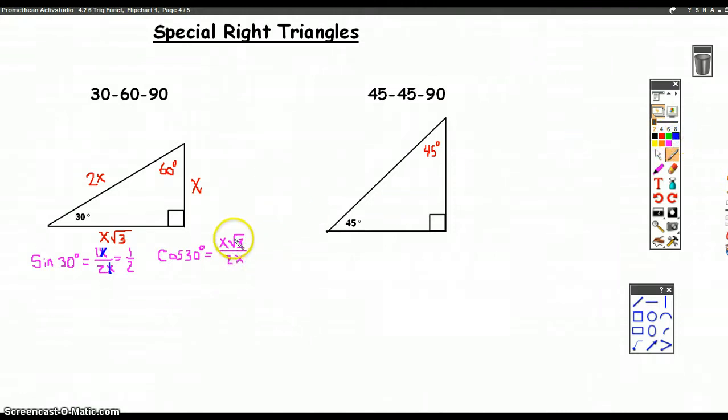And, what do you know, again, the X's cancel, and I get square root 3 over 2 as my ratio.